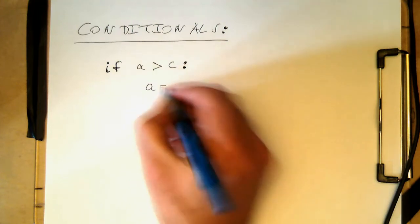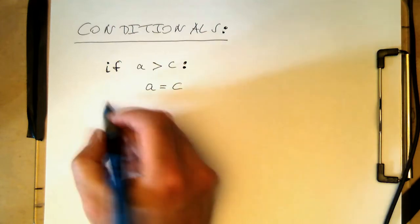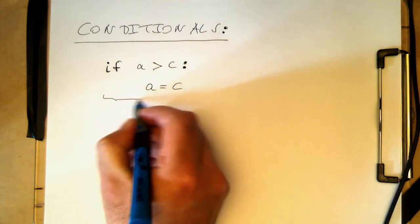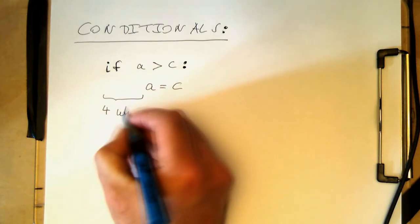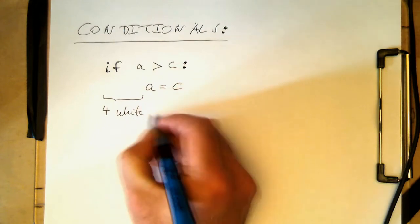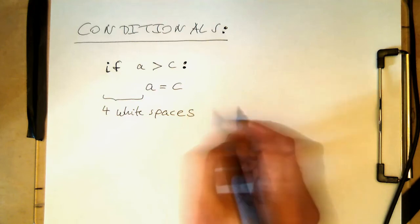let's say a equals c. Then I see here, I have this indent here. And here we need four white spaces. No tabs, white spaces.